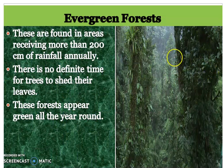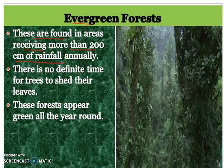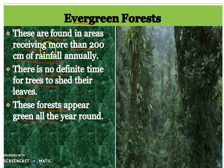The next type of forests are Evergreen forests. These are found in areas receiving more than 200 cm of rainfall. Such forests are found in the Western Ghats in India. There is no definite time for trees to shed their leaves — they shed leaves throughout the year and new leaves also appear. That's why these forests always look green all year round, and that's why they are called Evergreen forests.